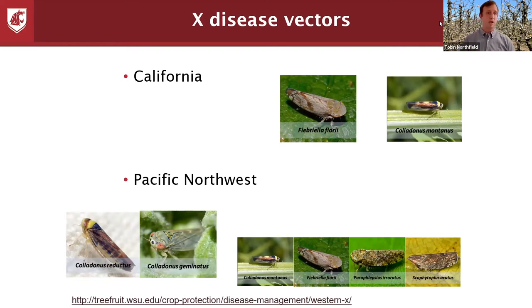In the Pacific Northwest, the two most common species are Cholodonus reductus and Cholodonus geminatus. We also have a range of four other species that are less commonly found.